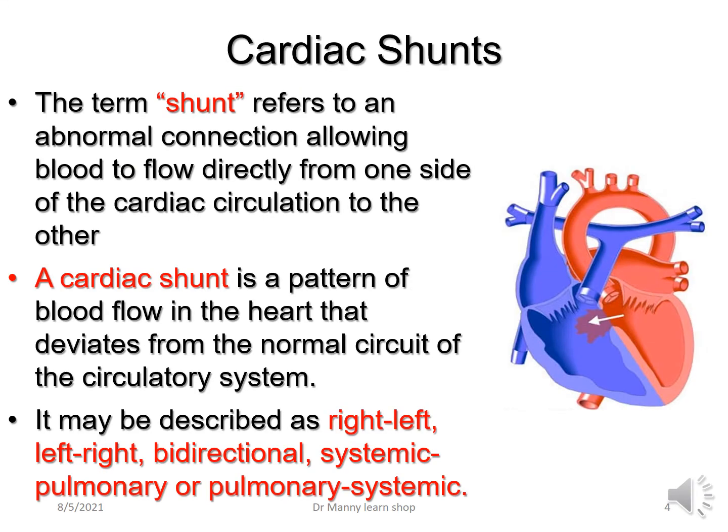So what's a cardiac shunt? The term shunt refers to an abnormal connection allowing blood to flow directly from one side of the cardiac circulation to the other. A cardiac shunt is a pattern of blood flow that deviates from the normal circuit. It can be described as right-left, left-right, bi-directional, systemic-pulmonary, or pulmonary-systemic.